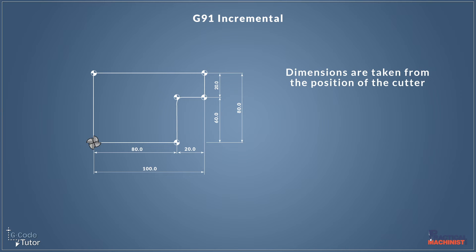So if we use the same example as we used when discussing absolute, and we put our cutter on the bottom left datum position here and we wish to move our cutter to the next position, we would move 80 millimetres to the right in x so our cutter ends up here.